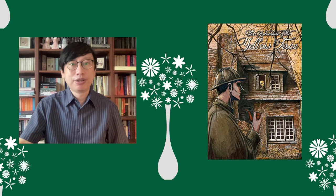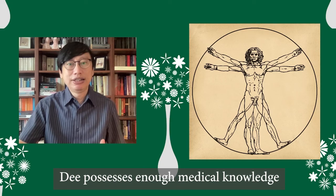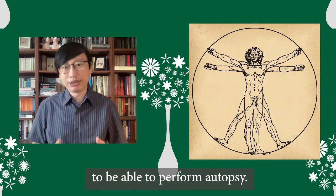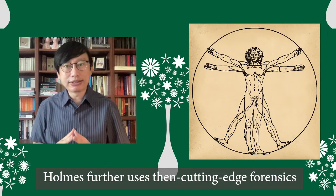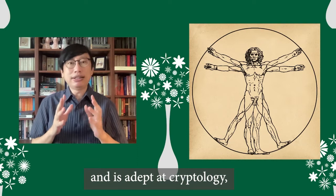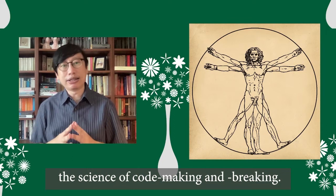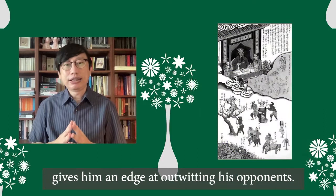Both Dee and Holmes are men of science. Dee possesses enough medical knowledge to be able to perform an autopsy. Like Holmes, he is familiar with the chemicals and cures of the day. Holmes further uses then-cutting-edge forensics such as fingerprint analysis. He can also read handwriting and is adept at cryptology, the science of code-making and breaking.